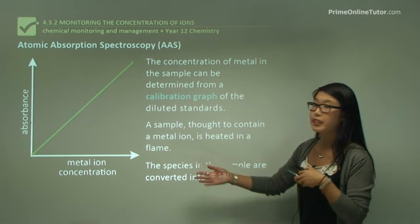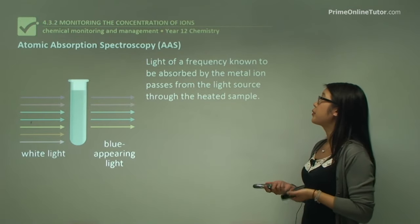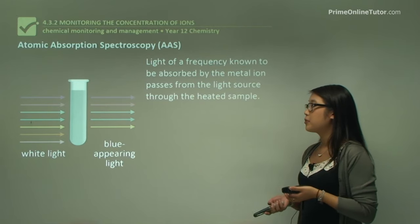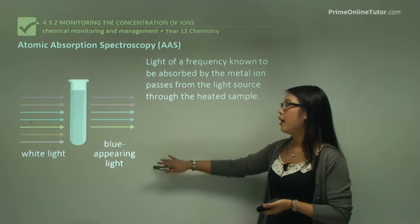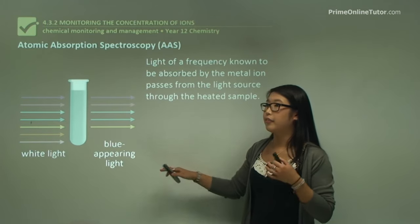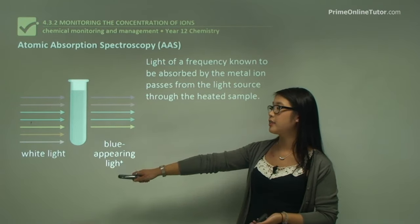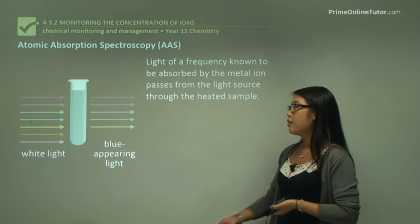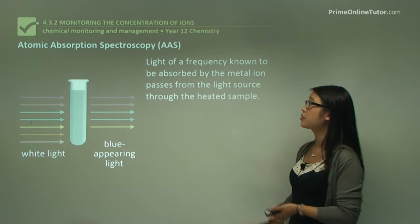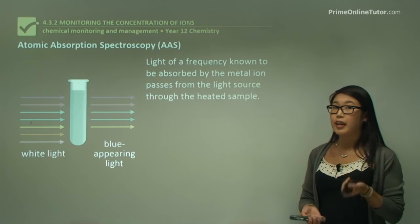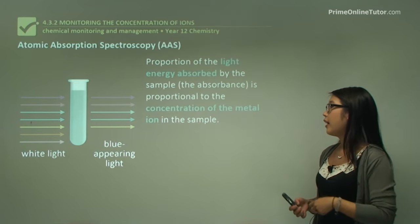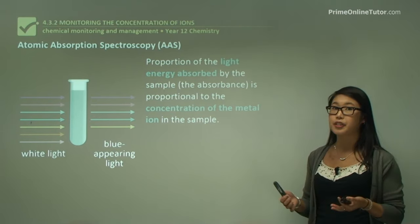Species in the sample are converted into gases. Light of a frequency known to be absorbed by the metal — meaning it's specific for that ion — is passed through the vaporized sample. The sample contains certain ions that absorb this light and only pass out the rest. So we get a readout of how much absorbance is present. For example, white light passed through a sample may come out as blue light because some frequencies have been absorbed. The amount of absorption is proportional to the concentration of ions in the sample.